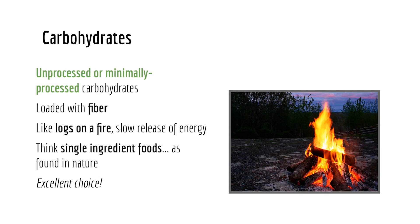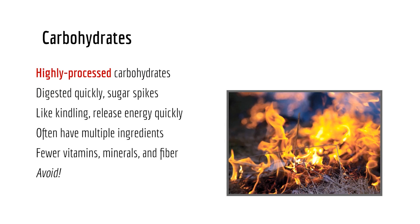On one end, we have our unprocessed or minimally processed carbohydrates — these are our sweet potatoes, the logs on the fire. They are loaded with fiber and water and allow a nice slow release of energy. On the other end of the spectrum, we have our highly processed carbohydrates — this is our Frosted Flakes. These carbohydrates are digested quickly, they're void of fiber, a lot of times the water is removed, we've lost a lot of the nutrition, and we get a big spike in energy.